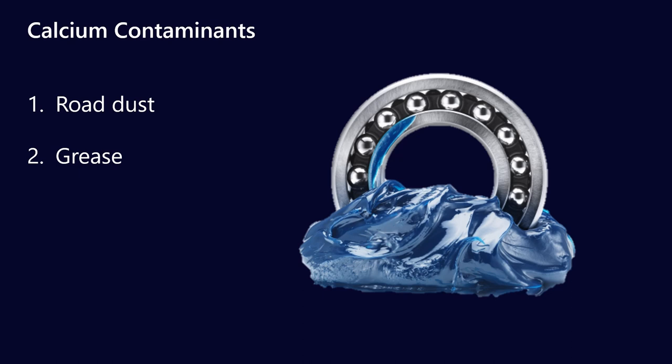The other way it can get in is grease contamination. So calcium complex and calcium sulfonate greases are very commonly used in industry. Calcium sulfonate is probably the more well-known one because it has quite good water resistance properties. Very commonly used in the mining industry or the paper machine industry, steel industry, things like that. So calcium sulfonate greases, if for any reason they were to leak out of, let's say, a bearing and they get into your oil system, that's another way that you will see calcium contamination in your oil system.